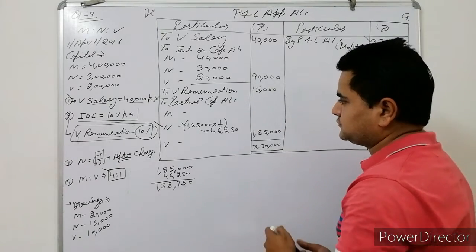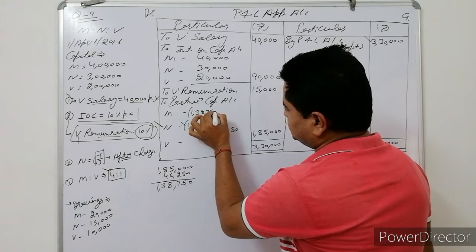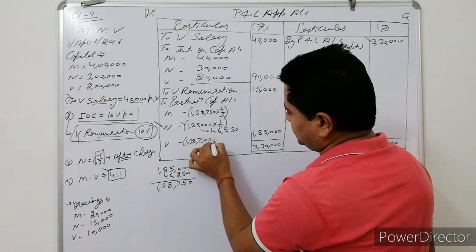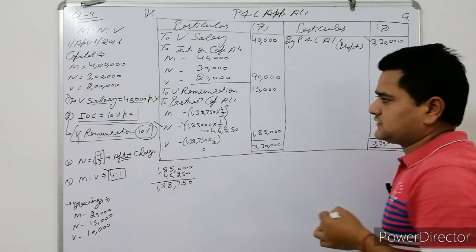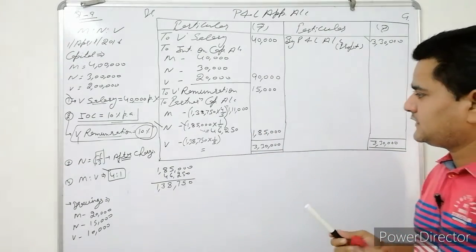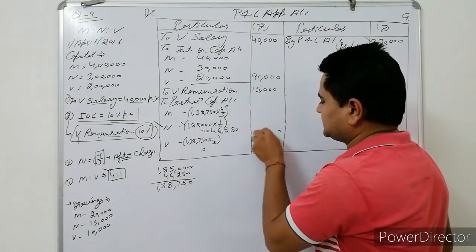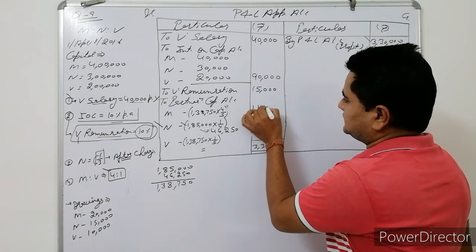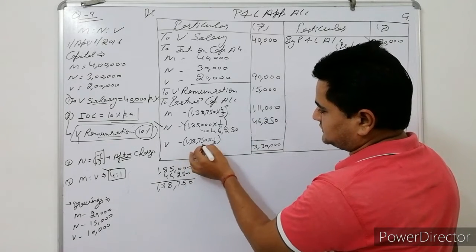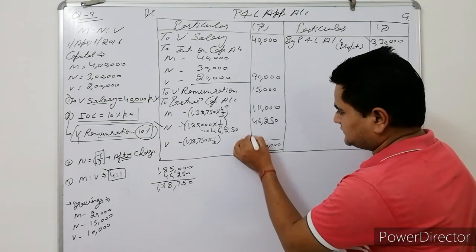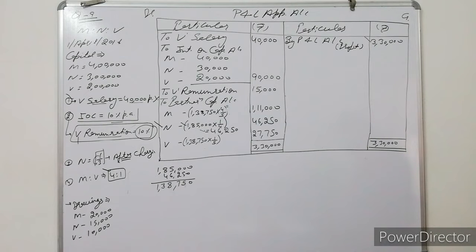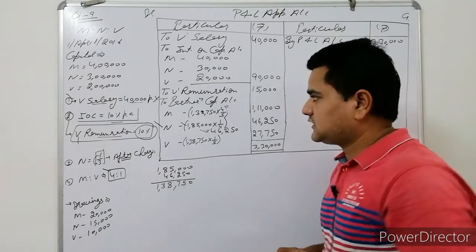So the profit distribution: Manish = Rs.1,11,000; Navan = Rs.46,250; Weibo = Rs.27,750. Total = Rs.1,85,000. That completes the appropriation account. Now let's prepare the capital account.